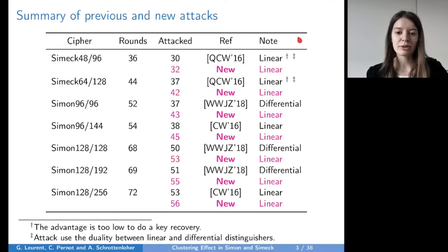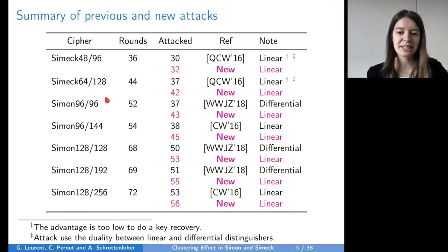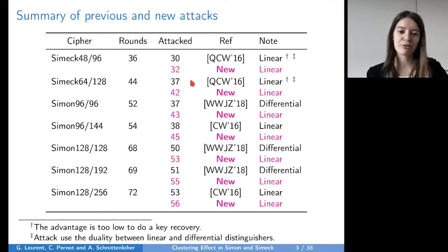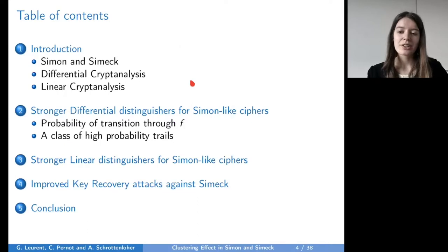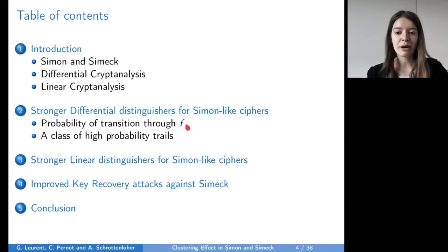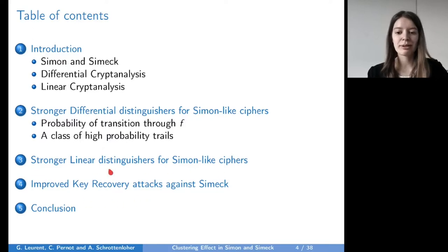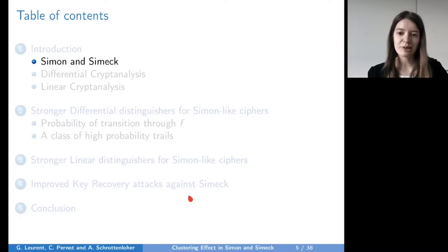Here is a brief overview of our results. For example, for CIMEC with a block size of 64 bits and a key size of 128 bits, we obtained an attack over 42 rounds out of 44, while previously the best attack only reached 37 rounds. First, I will describe Simon and CIMEC and differential and linear cryptanalysis. Then I will present our stronger distinguisher for differential and linear cryptanalysis, and then our improved key recovery attacks against Simon and CIMEC.